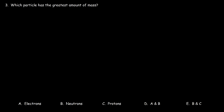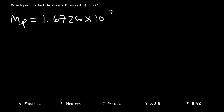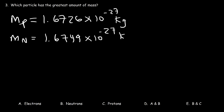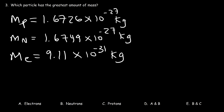Number three: which particle has the greatest amount of mass? The mass of a proton is 1.6726 × 10⁻²⁷ kg. The mass of a neutron is 1.6749 × 10⁻²⁷ kg, so a neutron is slightly heavier than a proton. In terms of atomic mass units, a proton is approximately 1 amu, the same is true for a neutron — but the neutron is slightly more massive.